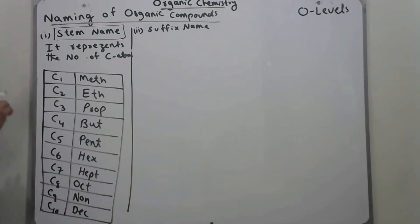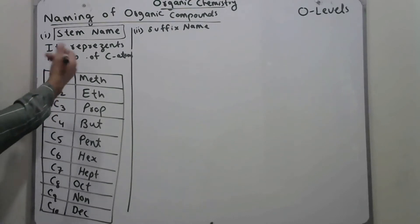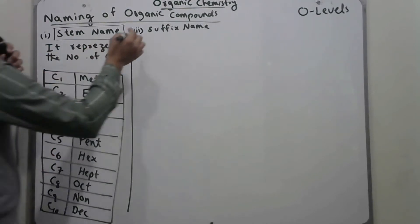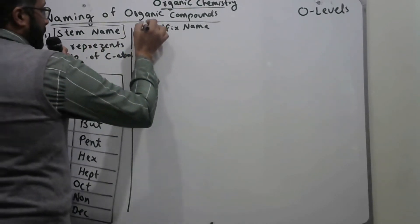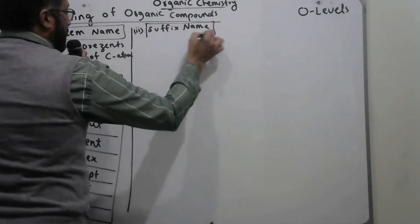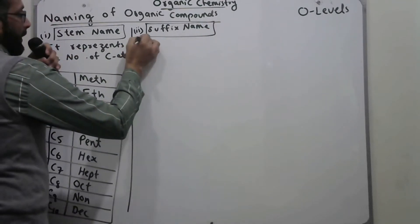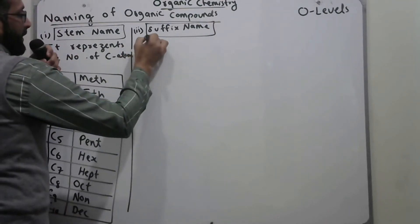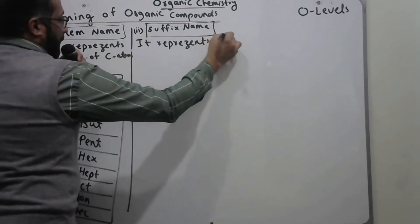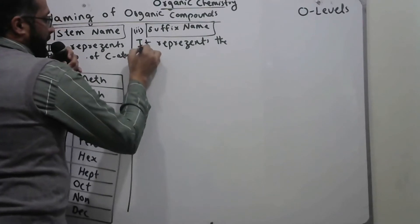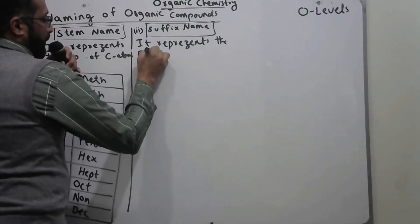For nine carbons we write 'non', and for ten carbons we write 'dec'. These are the basic stem names used for any organic compound. The suffix name, or name of the functional group, represents the functional group present in the organic compound.